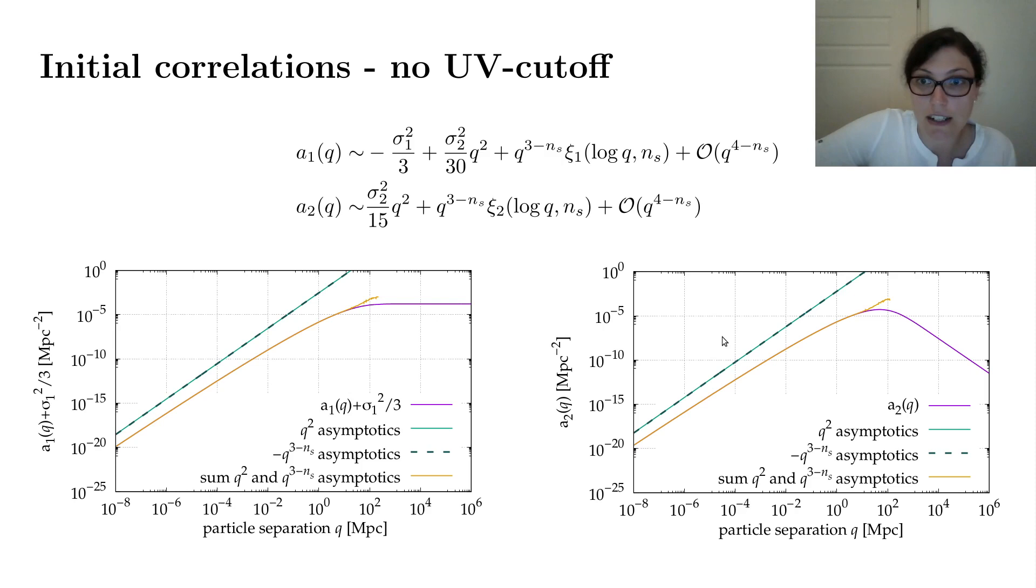As you can see now here in the figures, where in purple you have the function a₂(q) and a₁(q) without the constant pre-factor. You see that the asymptotics of the q² part and the q^(3-ns) part basically approximately cancel. If you take the sum of them, then you resemble your functions. We really need this q^(3-ns) term to correctly describe the small scale behavior of these functions.